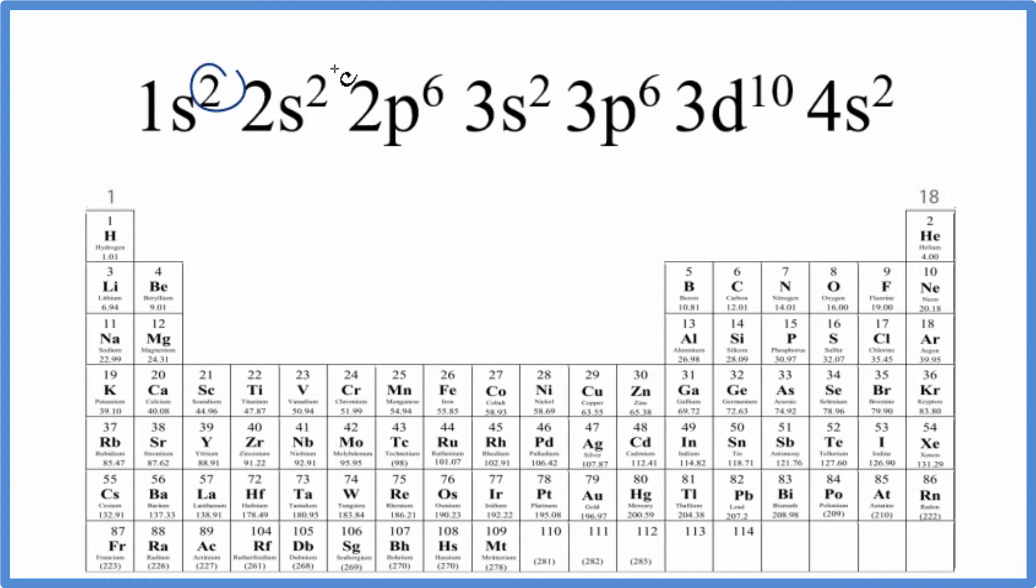The easiest way is to just count up all of these electrons. So when you do that, you end up with a total of 30 electrons.